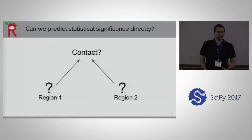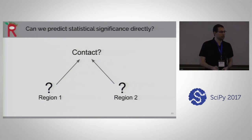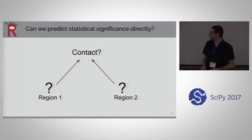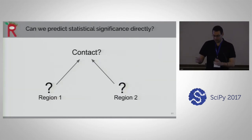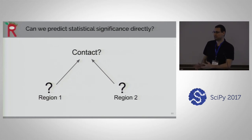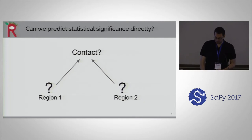We want to ask: can we predict statistically significant contacts directly without the need to run a HI-C experiment and without running FIT-HI-C? Presumably, we would be taking in two regions and trying to predict whether or not they're in statistically significant contact, not the raw number of contacts from a FIT-HI-C experiment.